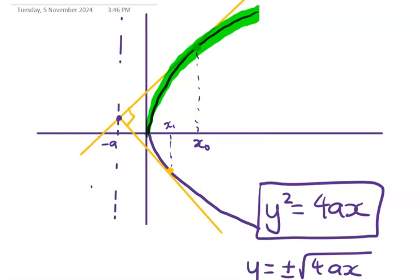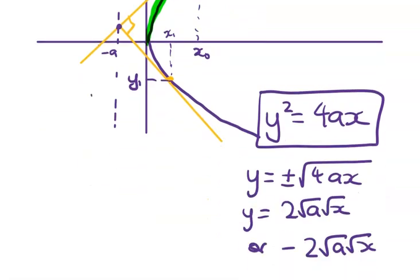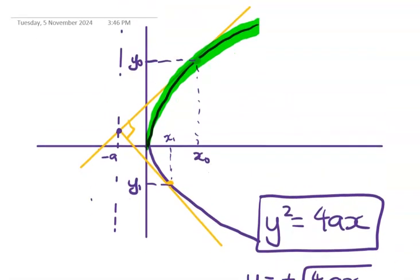So the top half of that parabola is at y equals 2 root a root x, and the bottom half is at negative 2 root a root x. So we can see that for x naught, we've got a y value up here, which I'm going to call y naught. And for x1, we've got a y value down here, which I'll call y1. But we're going to get the y values using either the top or the bottom one. Okay, what I'd like you to do now is pause the video and see if you can now get the whole way through this question, now that you've got a good setup.